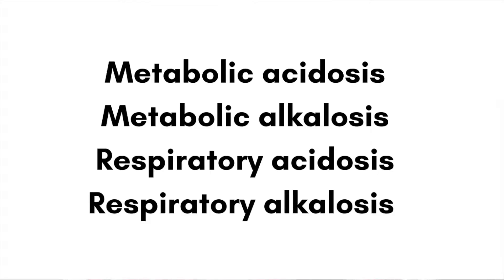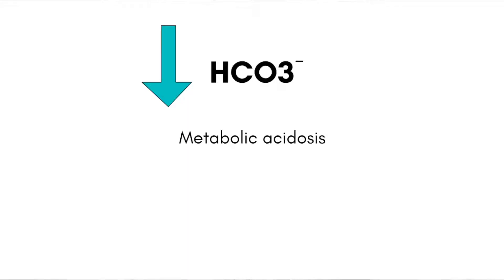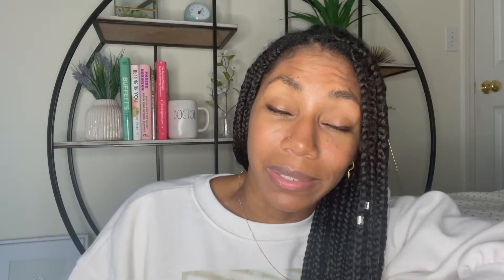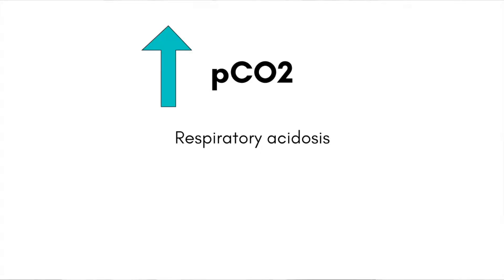The four components of acid-base status are metabolic acidosis, metabolic alkalosis, respiratory acidosis, and respiratory alkalosis. Metabolic acidosis simply means there is not enough bicarb — too much acid, too many hydrogen ions. Metabolic alkalosis means we have too much bicarb and not enough acid. Respiratory acidosis means there is too much carbon dioxide, and respiratory alkalosis means there is too little carbon dioxide.